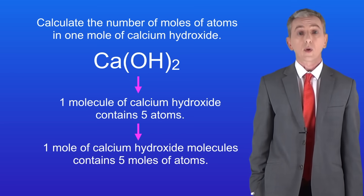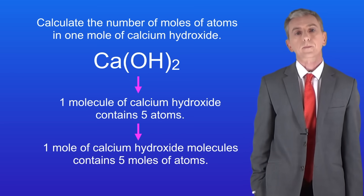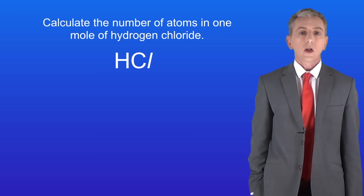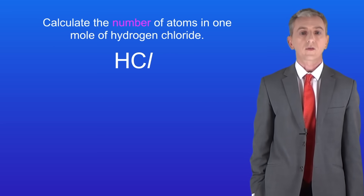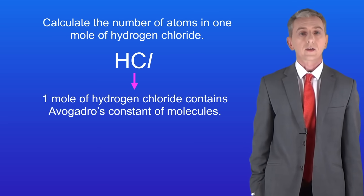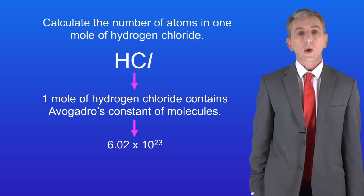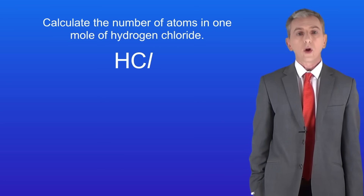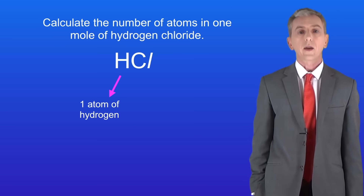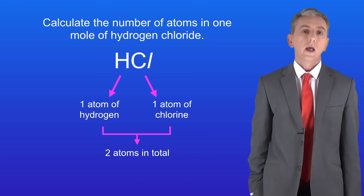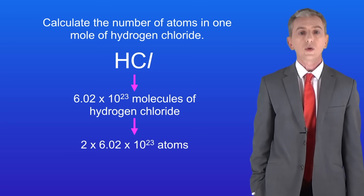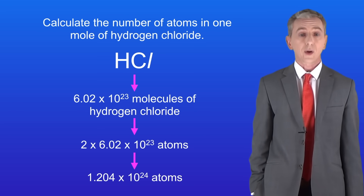Okay, so now that we can calculate the number of moles of atoms, we're ready to start working with Avogadro's constant. Take a look at this question: calculate the number of atoms in one mole of hydrogen chloride. You'll notice that now we're asked for the number of atoms, not the number of moles of atoms. Remember that one mole of hydrogen chloride contains Avogadro's constant of molecules, in other words 6.02 times 10 to the power of 23. The formula of hydrogen chloride is HCl, which means that one molecule of hydrogen chloride contains one atom of hydrogen and one atom of chlorine, so two atoms in total. So if we have 6.02 times 10 to the power of 23 molecules of hydrogen chloride, we must have two times that number of atoms, in other words 1.204 times 10 to the power of 24 atoms.